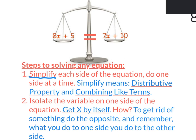Step two is the goal of solving any equation: get X by itself on one side. To get rid of something, you do the opposite, and what you do to one side you must do to the other side to maintain the balance. These steps — simplify using distributive property and combining like terms, then isolate the variable — apply to Algebra 1, Algebra 2, any equation, no matter how simple or complicated.